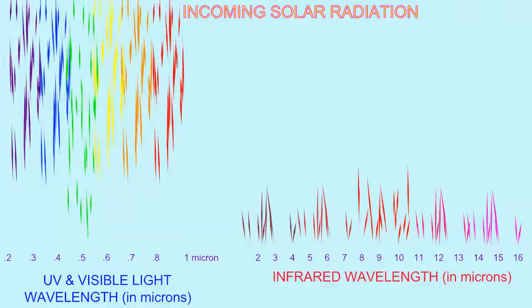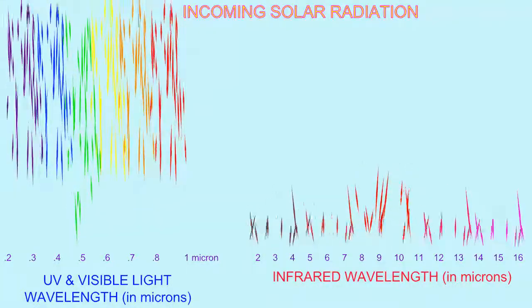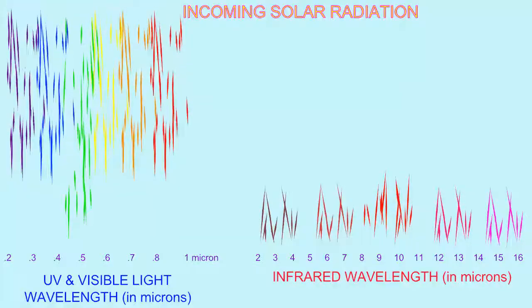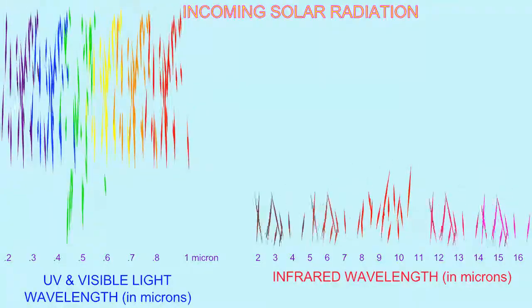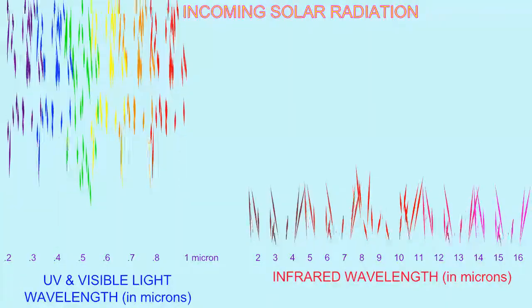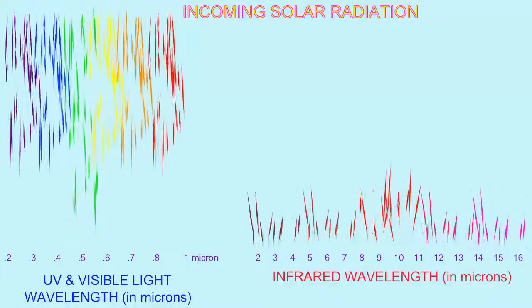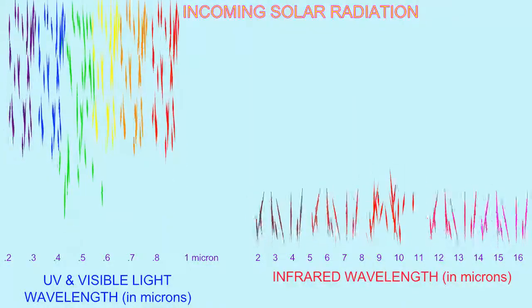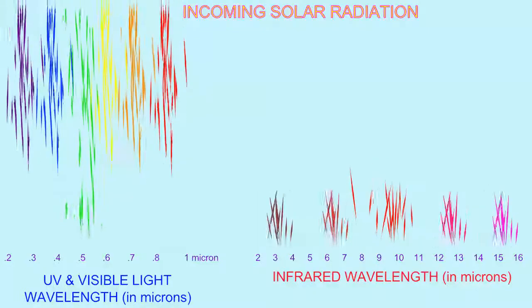The majority of the radiation which reaches planet Earth from the Sun is in the visible light spectrum, ranging from four-tenths to eight-tenths of a micron, with its peak at 600 nanometers, or six-tenths of a micron.